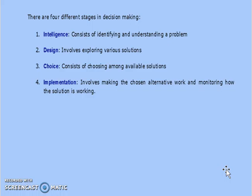The second stage is the design stage, which involves exploring various solutions. After identifying the problem, alternatives are formed to find the most effective way to solve it. The third stage is the choice stage, which consists of choosing among available solutions — selecting the alternative that best optimizes the resolution of the problem. The fourth stage is the implementation stage, which involves making the chosen alternative work and monitoring how the solution is working.